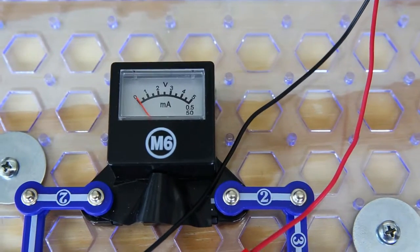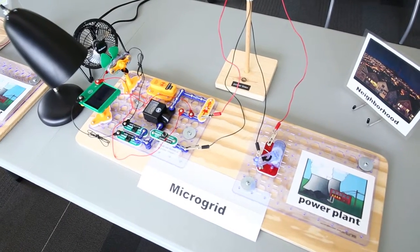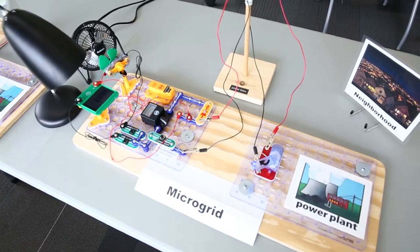However, the microgrid neighborhood can source its power locally using renewable energy features so the lights can stay on even in the event of an outage.